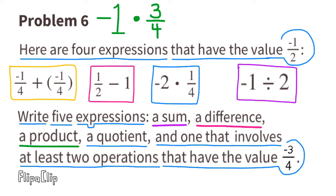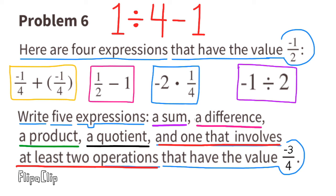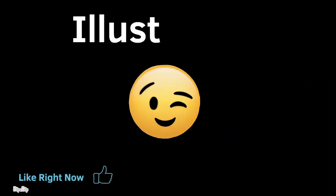For the product: negative one times three-fourths equals negative three-fourths. For the quotient: negative one divided by four-thirds is the same as negative one times the reciprocal of four-thirds, which also equals negative three-fourths. For the last expression involving two operations: one divided by four minus one. Since one divided by four is one-fourth, and one-fourth minus one equals negative three-fourths, this expression has the value negative three-fourths.